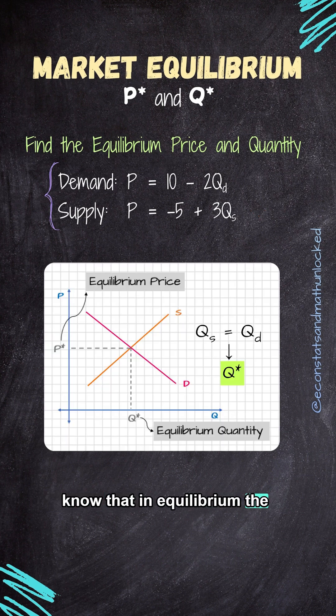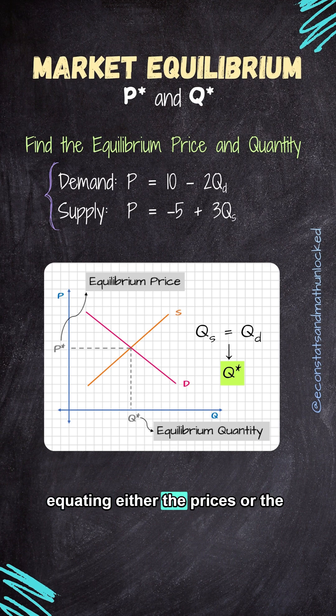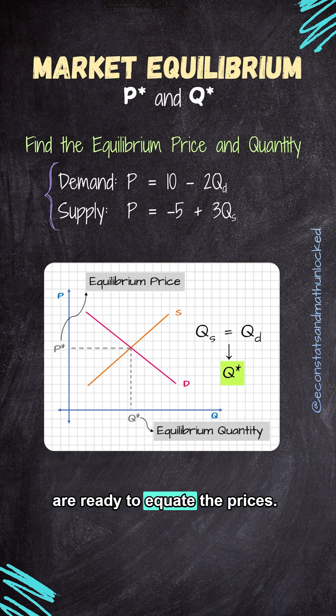We know that in equilibrium, the quantity demanded equals the quantity supplied, and the price is the same for both. This means we can find the equilibrium price and the equilibrium quantity by equating either the prices or the quantities. Since both equations are already in the price form, we are ready to equate the prices.